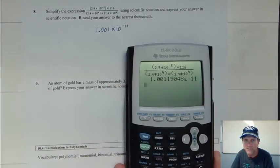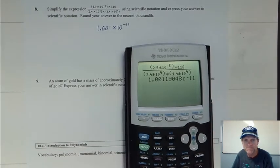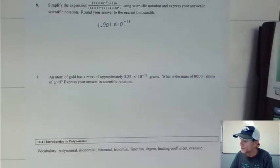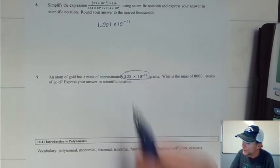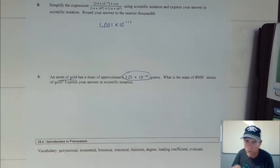See how that looks on your calculator and then how it looks for our answer. And then the last one here, I'll write it out longhand but we'll use the technology to solve it. It talks about, we have some grams for an atom of gold.